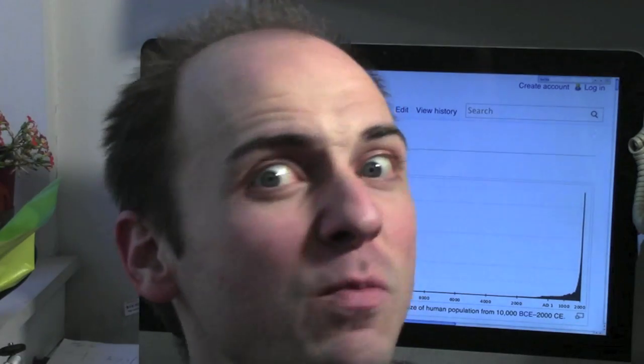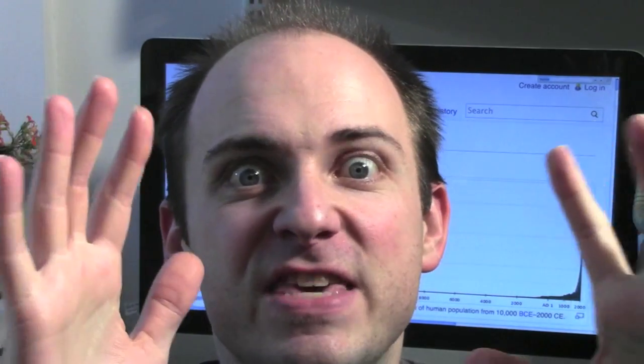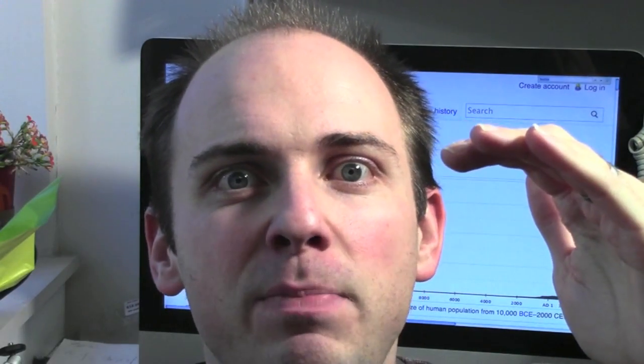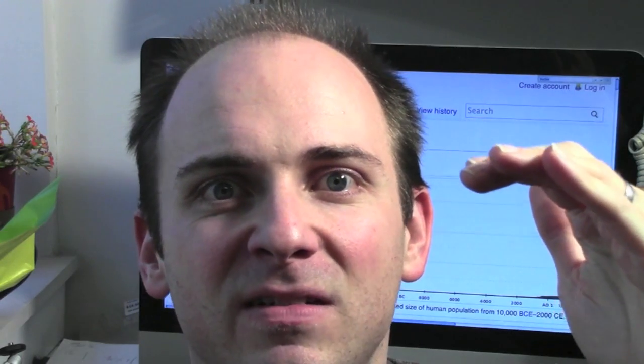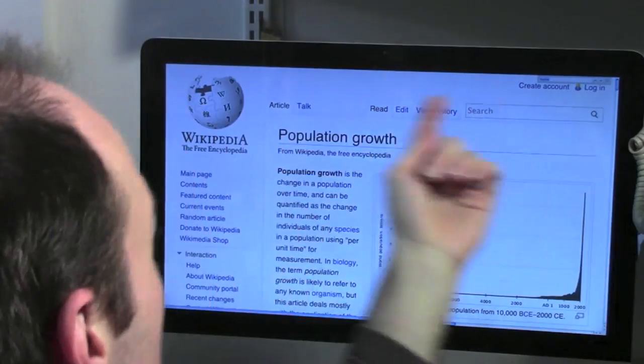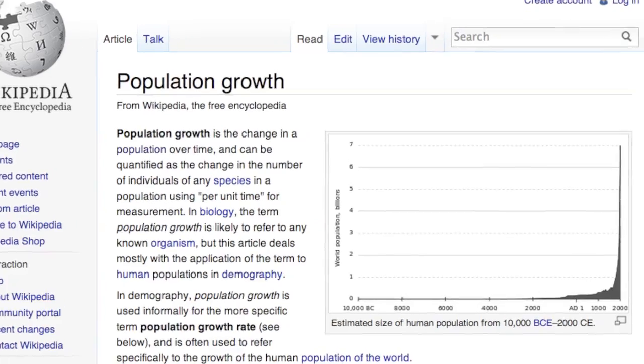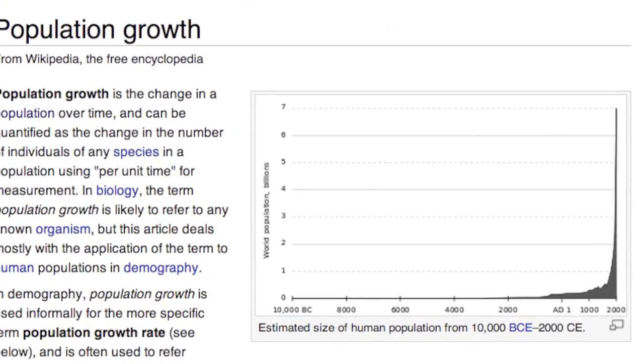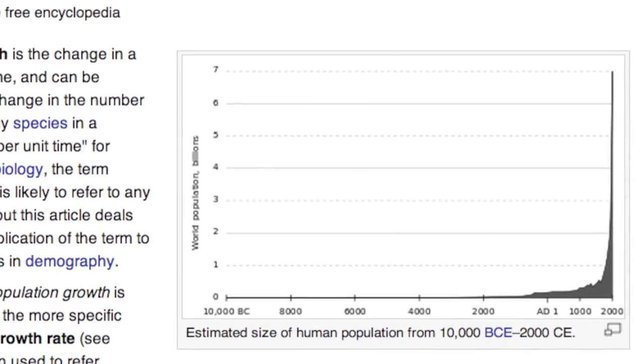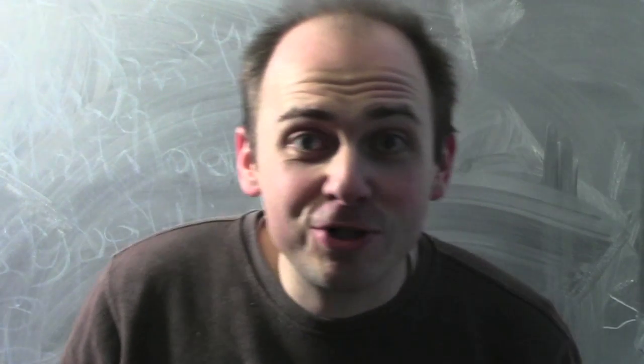There's tons more examples of functions coming from the real world. Here's one: human population. It's a function. The input is a year, the output is the number of people alive during that year. If you want to see this function, just take a look at Wikipedia and the article on population growth. There's a graph of that function. Along the x-axis is years, and along the y-axis is the human population.